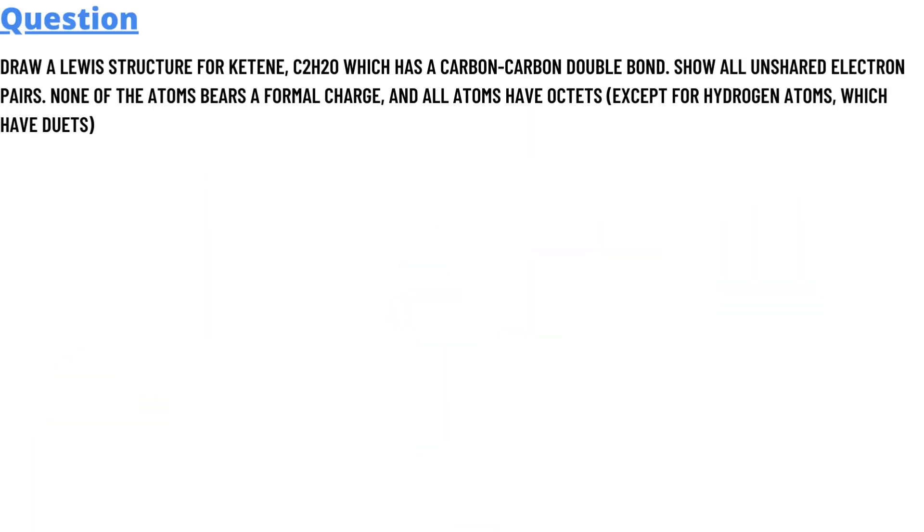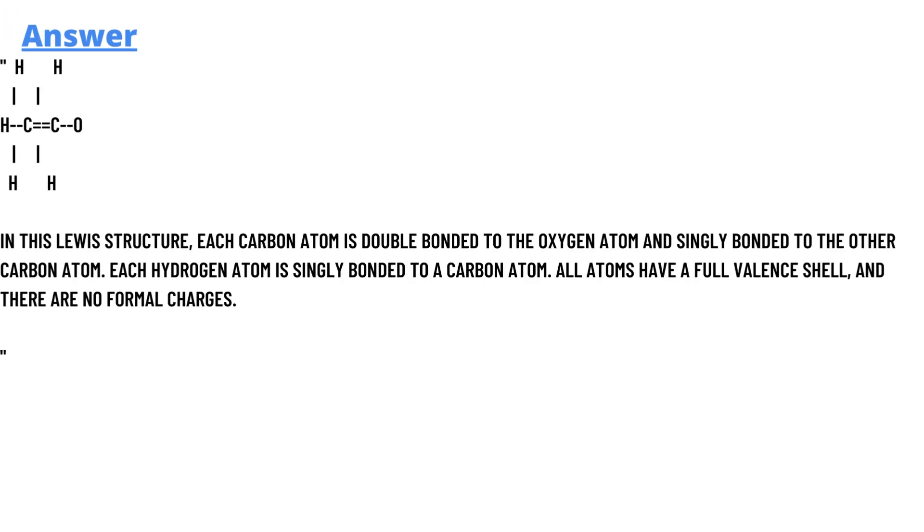So our today question is: Draw a Lewis structure for ketene, C2H2O, which has a carbon-carbon double bond. Show all unshared electron pairs. None of the atoms bears a formal charge, and all atoms have octets except for hydrogen atoms which have duets.